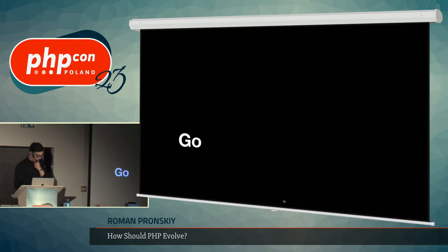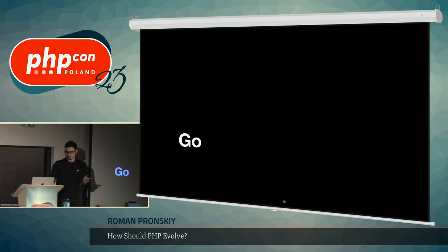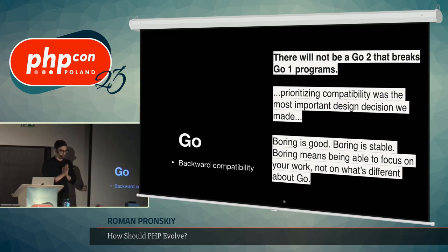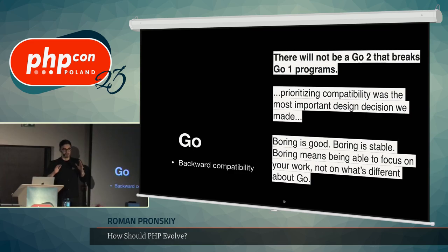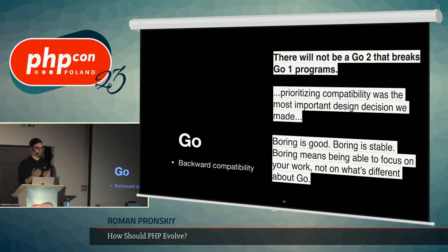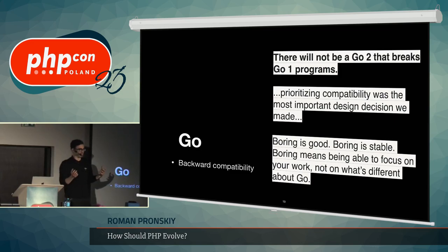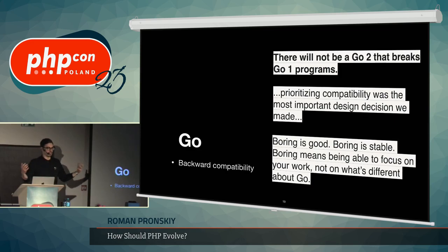Let's take Go. Go is younger than PHP, but they promise full backward compatibility. A program you wrote on Go 1.1 will run on Go 2 — even though Go 2 hasn't even released. They almost never have deprecations. PHP is not a new language, but it's also not a stable language in the same sense. Deprecations can sometimes be annoying, and that's somewhat confusing — it's not shiny new when dynamic changes keep coming.